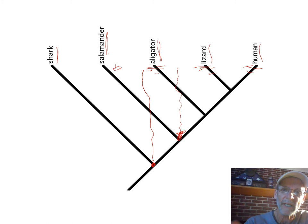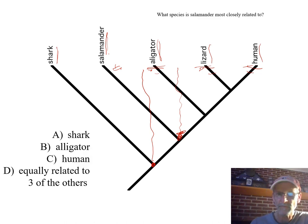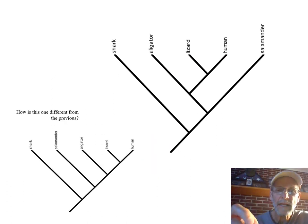This is a classic kind of question. Which would you predict would have the greatest number of differences compared to a salamander? So, equally related to three of the others is the answer to that one. And now this one last. Here was the picture we just looked at, right?